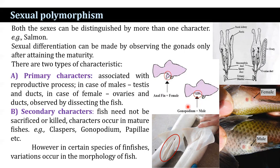In certain species of finned fishes, variations occur in the morphology of the fishes. It may be body shape, fins, coloration, different morphological characters such as head characters, and size also.